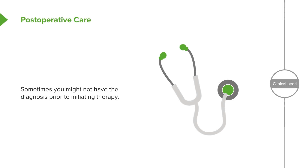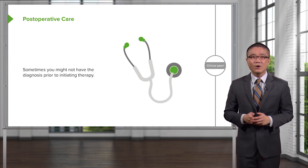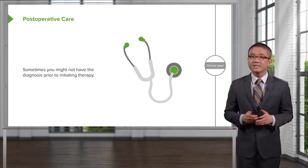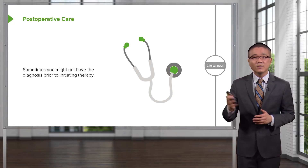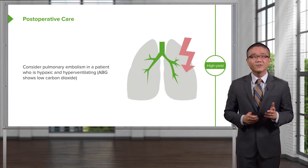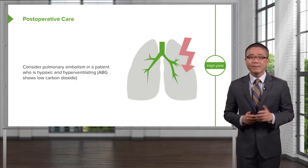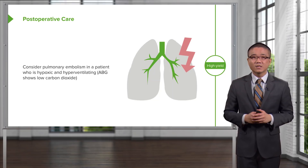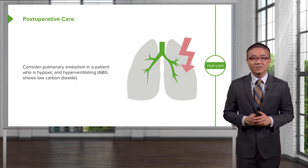Now let's go over some important take-home clinical pearls and high-yield information. Remember, sometimes in the post-operative period you might have to institute therapy prior to knowing the diagnosis. For example, Mrs. Jones with altered mental status — although you may not know why she has it, if she's not maintaining a protected airway or breathing, you will have to intubate the patient prior to having the actual diagnosis. After you manage the life-threatening deterioration, you then move on to further workup. High-yield information for your examination: please consider pulmonary embolism in a patient who is hypoxic and hyperventilating. Hyperventilation is demonstrated on an arterial blood gas as low carbon dioxide. Thank you very much for joining me on this discussion of post-operative care.